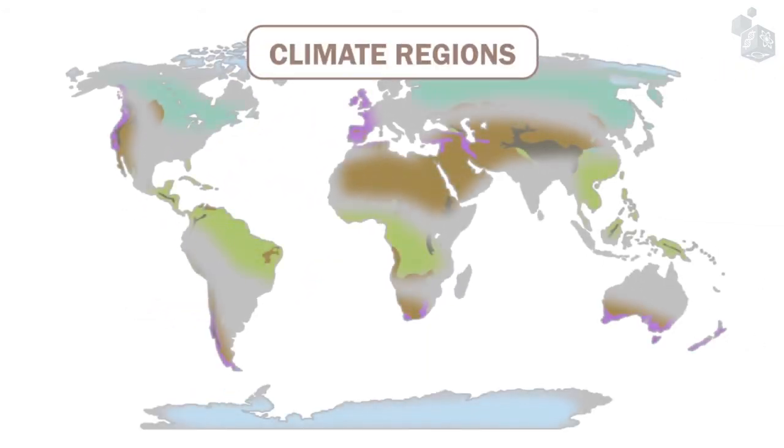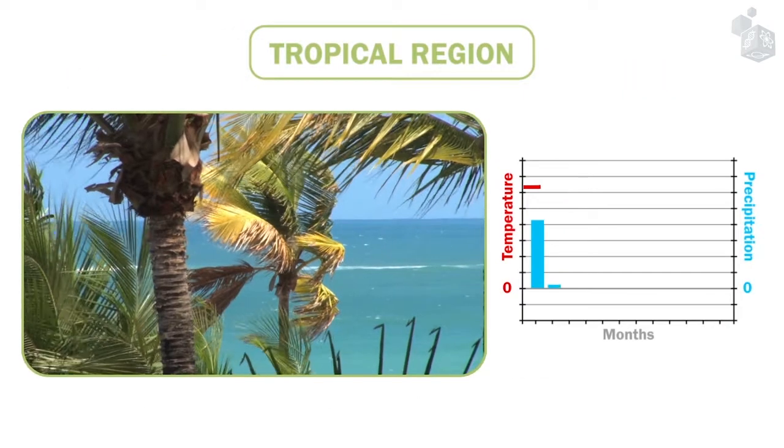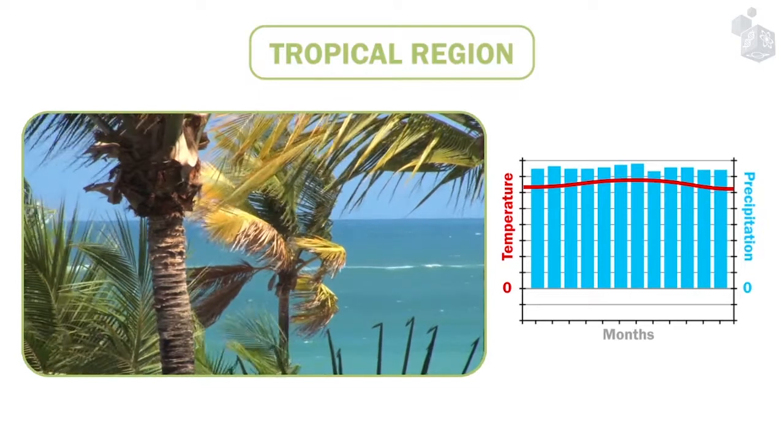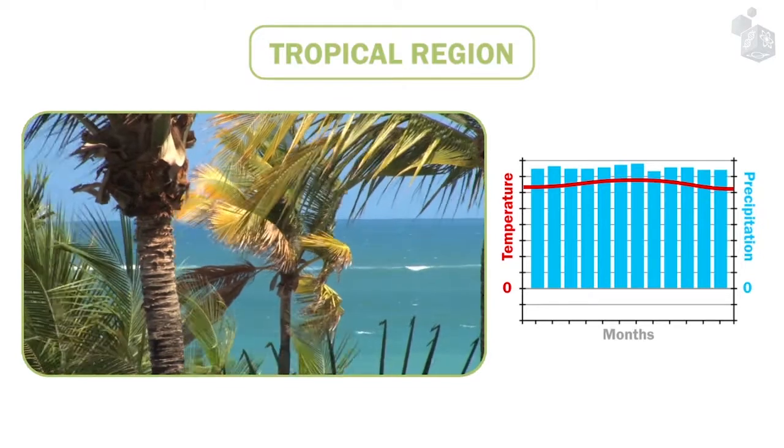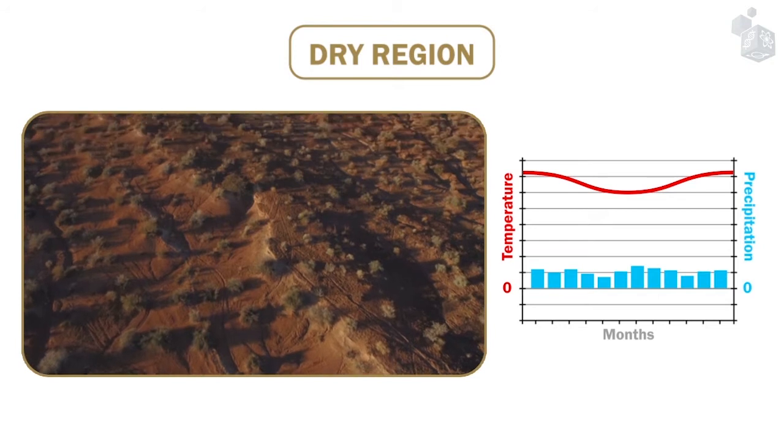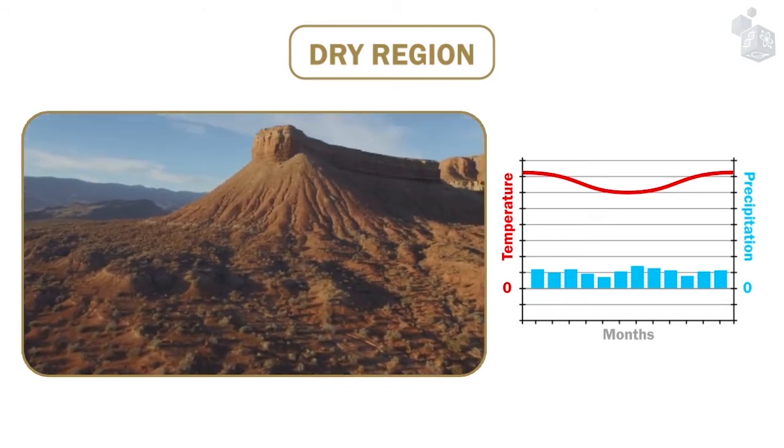There are six major climatic regions. Tropical regions have high temperatures and abundant rains. Dry regions are characterized by a lack of rain and extreme temperatures.